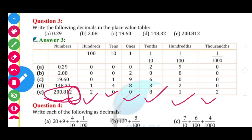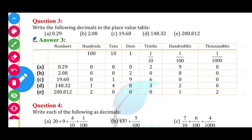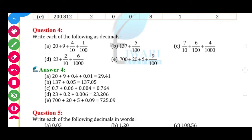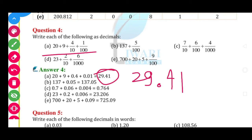200.8: 2 in 100s place, 0 in 10s place, 0 in ones place, 8 in 10th place — rest is 0. Students, you can make this box and fill it up. Question number 3 is just reverse of Question 2. Now we are going to Question number 4. So 20 + 9 + 4/10 + 1/100: 20 + 9 = 29, 4/10 = 0.4, 1/100 = 0.01. Answer is 29.41.